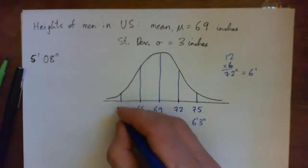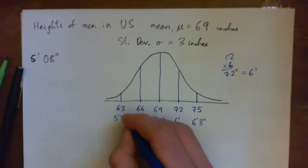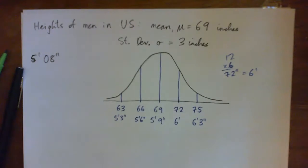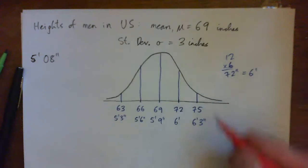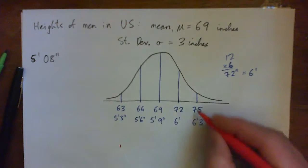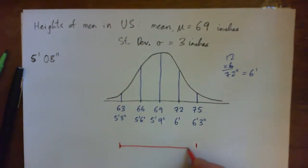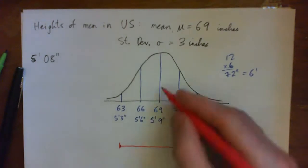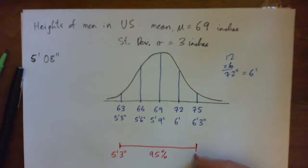Going down another three inches to 63, that's 5 foot 3. Now, 95% of men have heights within two standard deviations of the mean — so 95% of men have heights between 5 foot 3 and 6 foot 3.